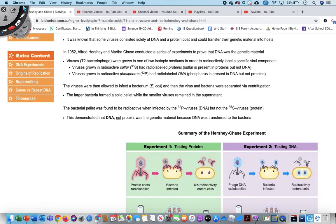And if the DNA was the one that was being injected as the genetic material, then after the virus finished invading the cell, injecting the cell with its genetic material, then the bacteria would have the radioactive sulfur.